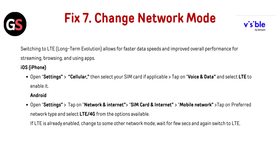Fix 7: Change Network Mode. Switching to LTE (Long Term Evolution) allows for faster data speeds and improved overall performance for streaming, browsing, and using apps. In iOS, open Settings, go to Cellular, then select your SIM card if applicable, tap on Voice and Data, and select LTE to enable it.